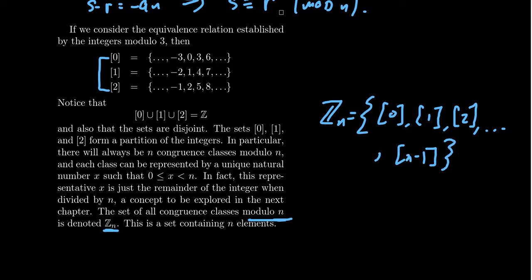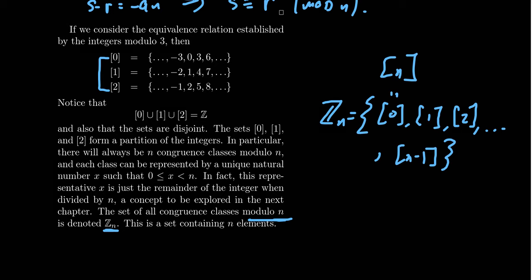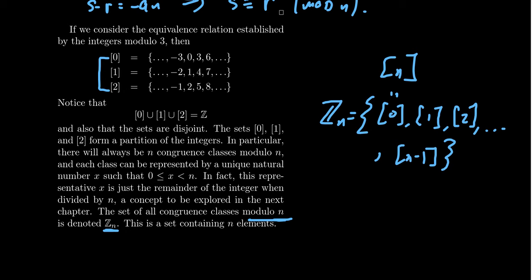So there's 0, there's 1, there's 2, and this will proceed all the way up to n-1. Because once you hit n, that's just the same thing as the congruence class containing 0. And so we want Z_n to be a partition of the integers Z, in which case every equivalence class shows up once and only once.